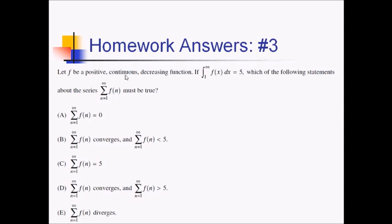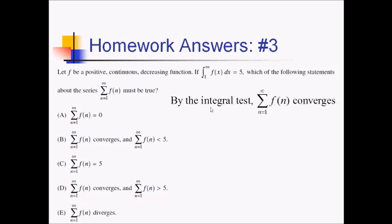For this problem, we're told that f is a positive continuous decreasing function and that the integral of f from 1 to infinity is 5. We want to know which statement about the series of f from 1 to infinity has to be true. The language — positive, continuous, decreasing — tells us that the integral and the corresponding series are going to behave the same way. The key here is that this integral converges to a single number, so the series must also converge by the integral test. So we can eliminate any answer choice that says the series does not converge, like answer choice E. We can also eliminate answer choices that make claims about the exact value of our series, like A and C, since the integral test doesn't give us the exact value.